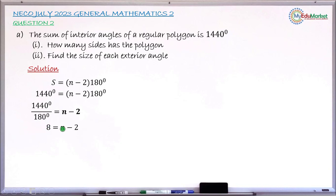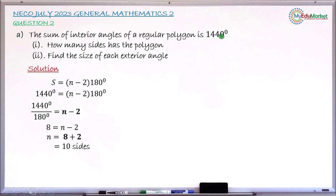So 8 equals N minus 2. Collecting like terms, the minus 2 shifts to the left-hand side, giving 8 plus 2 equals N. Therefore N equals 10, which means this polygon with a sum of interior angles of 1440 degrees has 10 sides. That answers Roman 1.